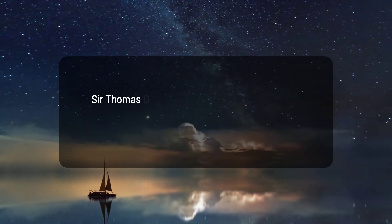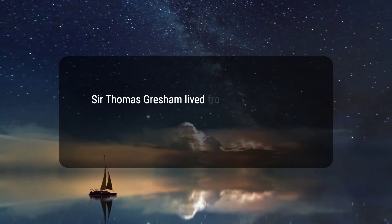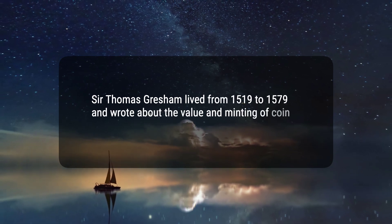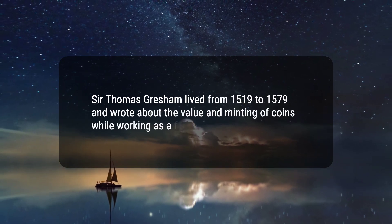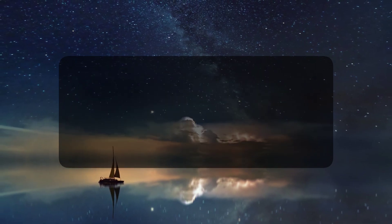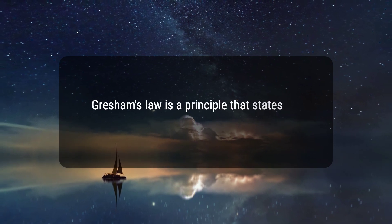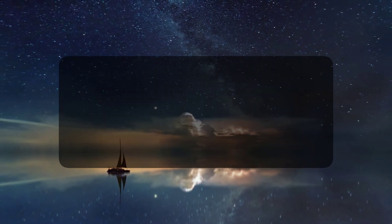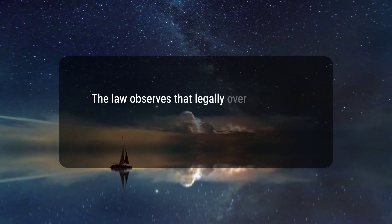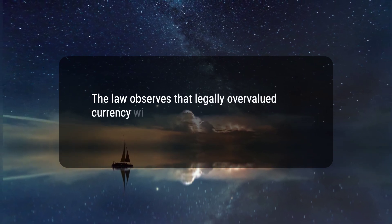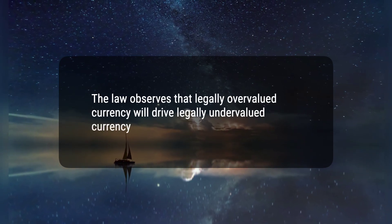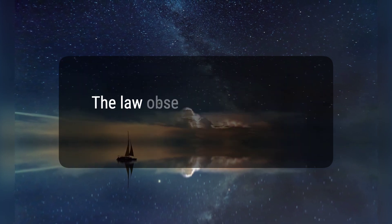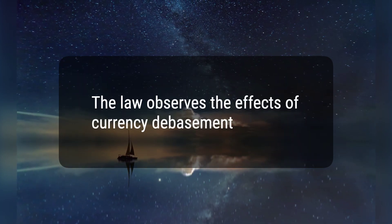Here are four key takeaways. 1. Sir Thomas Gresham lived from 1519 to 1579 and wrote about the value and minting of coins while working as a financier. 2. Gresham's Law is a principle that states that bad money drives out good. 3. The law observes that legally overvalued currency will drive legally undervalued currency out of circulation. 4. The law observes the effects of currency debasement.